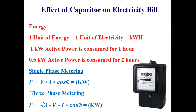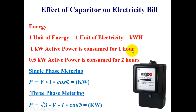First of all, we need to learn how the electricity bill is calculated. The unit of energy consumed by the consumer or delivered by the utility service provider is a kilowatt-hour — this is also one unit of electricity. If a consumer consumes 1000 watts or one kilowatt of active power in one hour, he has consumed one unit of energy. Similarly, if he consumes 500 watts for two hours, he has consumed the same one kilowatt-hour.